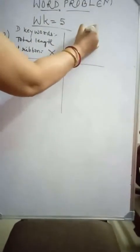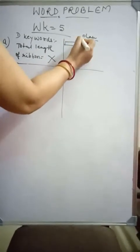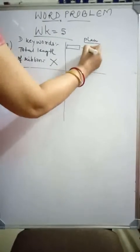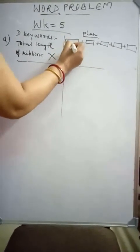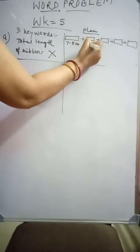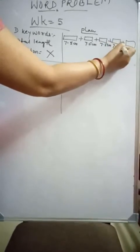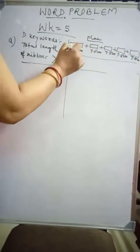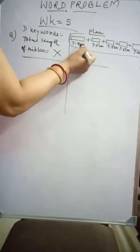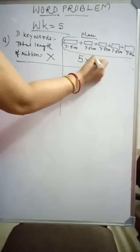So let us do the second step, which is planning. So here you see that Renu needs how many pieces of ribbon? 5 pieces of ribbon, each of length 7.5 cm. It means every piece is 7.5 cm long. So what do we study from this diagram? That 7.5 cm is repeated 5 times, so it is 5 times of 7.5 cm. So multiplication is used.